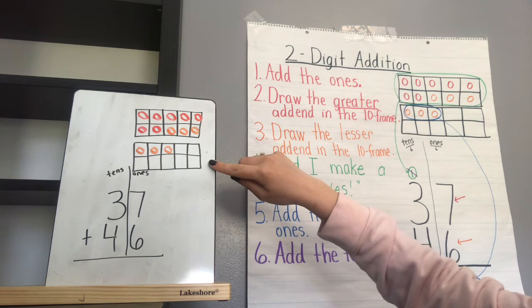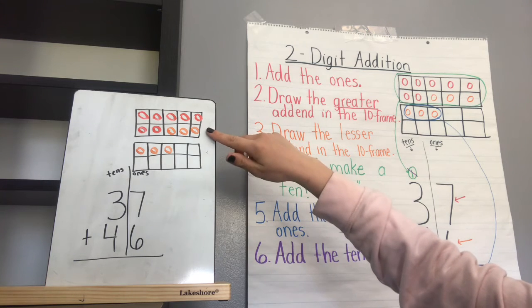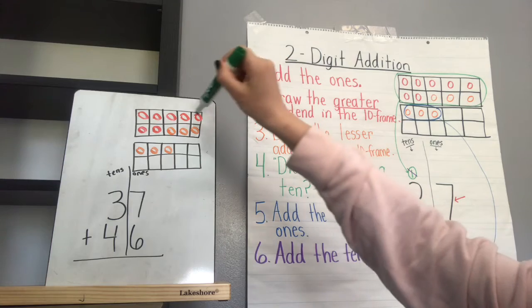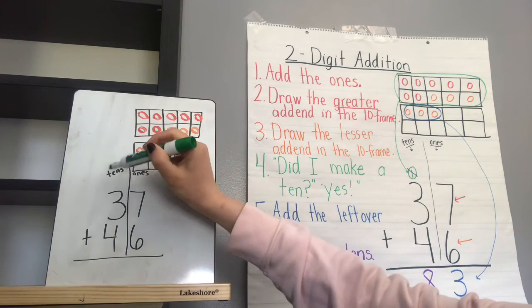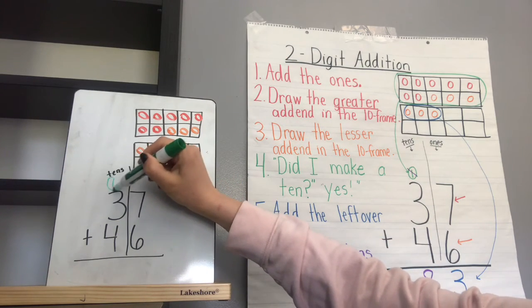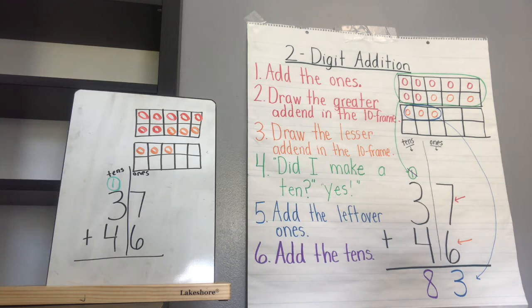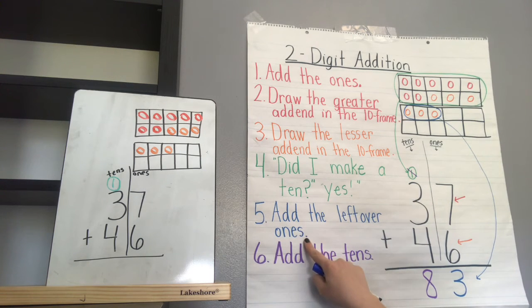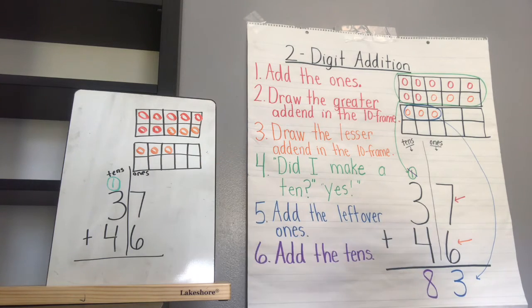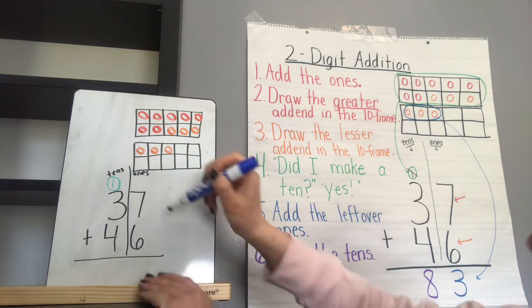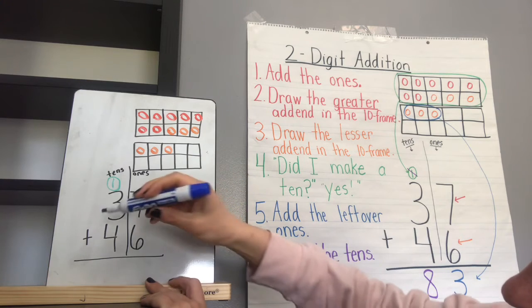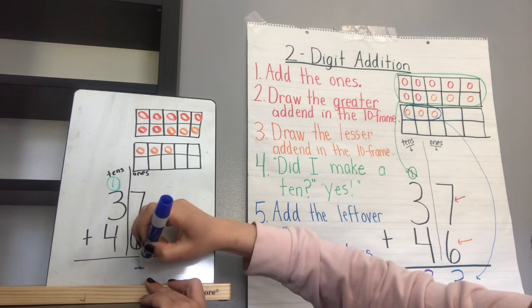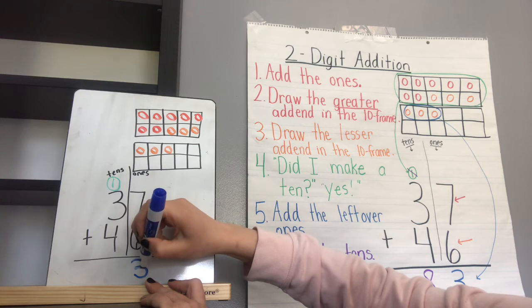Take a look at our 10-frame — did we make a new 10? Yes we did! So we're going to take these 10 and move them to the top of the tens value. Then we're going to add the leftover ones. How many ones do we have left over? You're right, we have three. So the three goes in the ones place. Nice job.